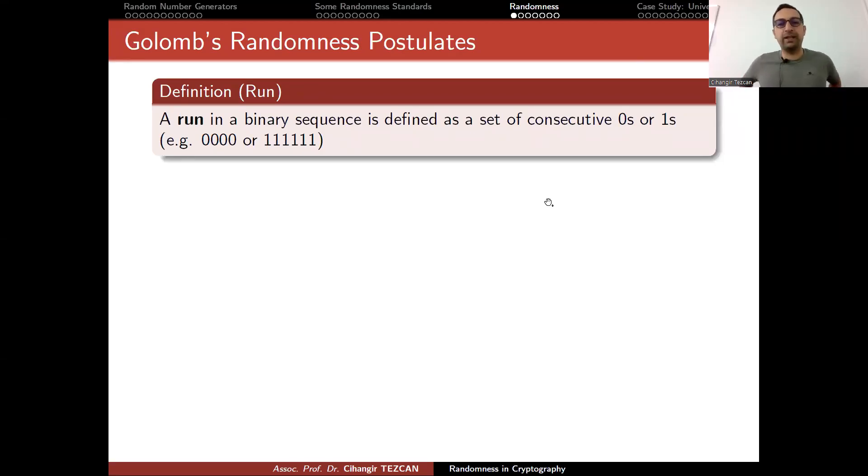Now that we are talking about randomness and pseudo-randomness, we have to check what is a random value. Since we are going to generate zeros and ones with finite length, we have to have a way of checking if it is random or not. Let's start with Golomb's randomness postulates. These are very basic definitions, and before seeing these three postulates, let's give some definitions first.